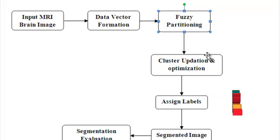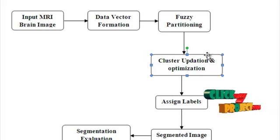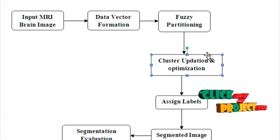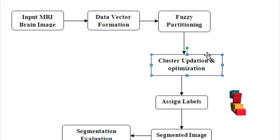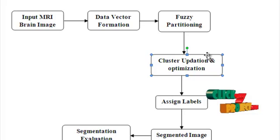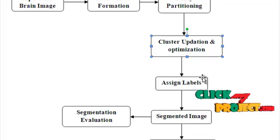The fourth block is cluster updation and optimization. We update the fuzzy membership degrees here. The above mentioned steps are repeated until the change of membership values is very small, where epsilon is typically 0.01. Euclidean distance is the objective function criteria here.